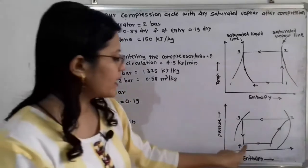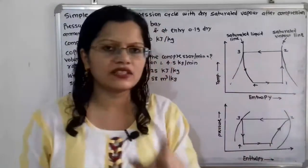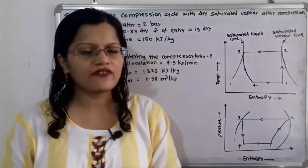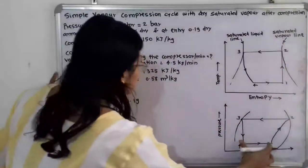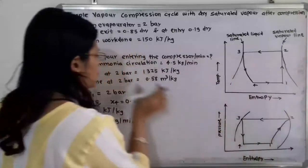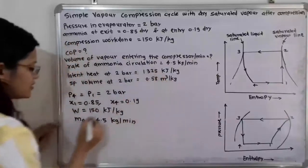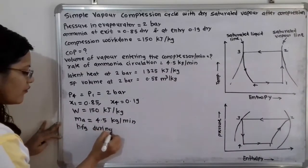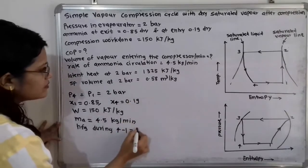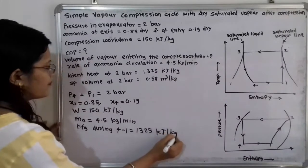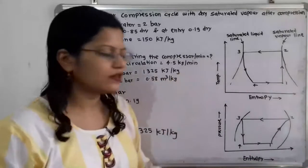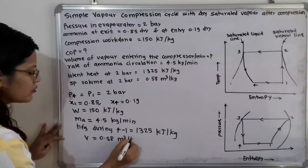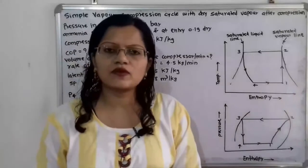The latent heat at 2 bar: during the evaporation process 4 to 1, the refrigerant undergoes a phase change absorbing latent heat from the surrounding medium. So hfg during process 4 to 1 is 1325 kilojoule per kilogram. The specific volume at 2 bar, v = 0.58 meter cube per kilogram.